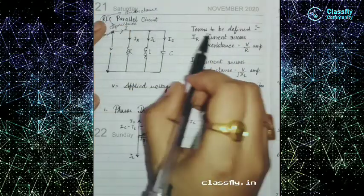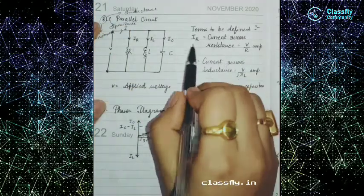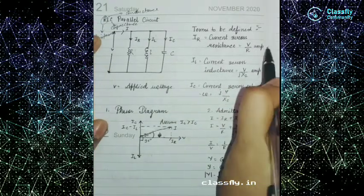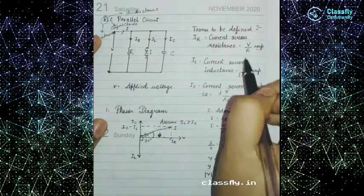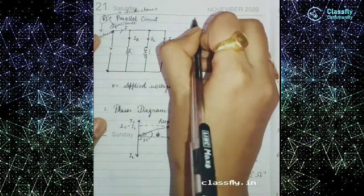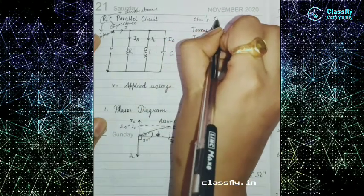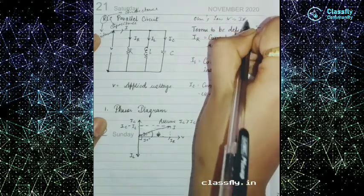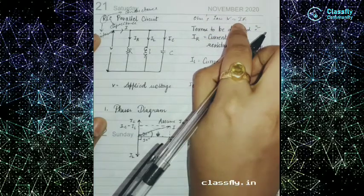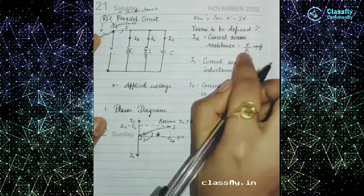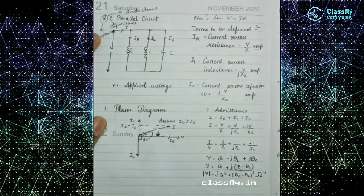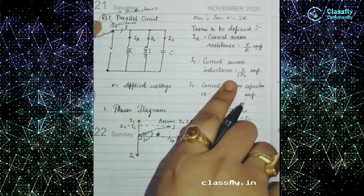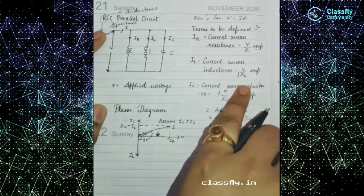IR is the current across resistance, denoted as V/R, and its unit is ampere. This is because by Ohm's law V = IR, so I = V/R. For IL, it is the current across inductance, given by V / (j·XL).